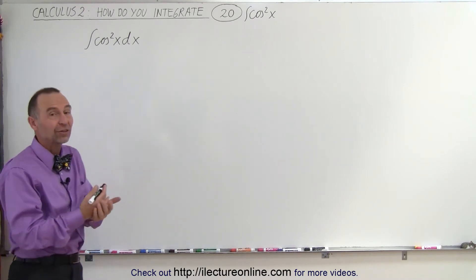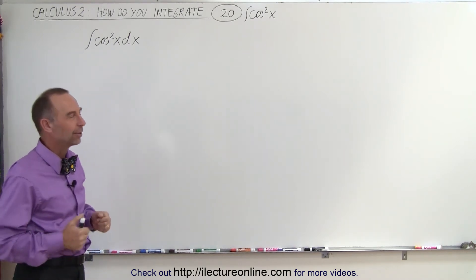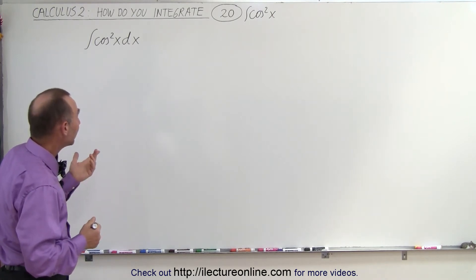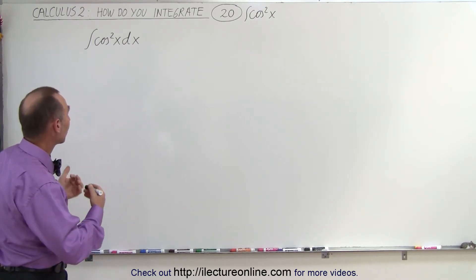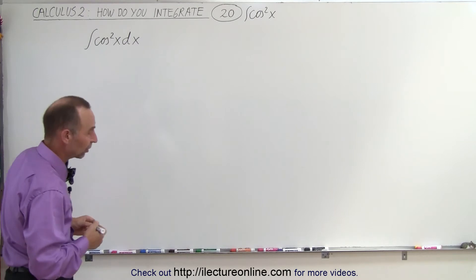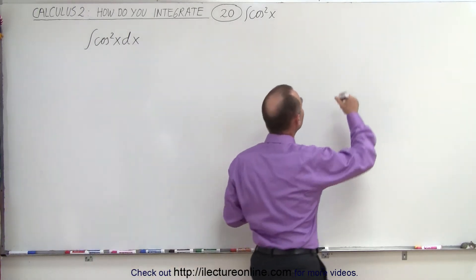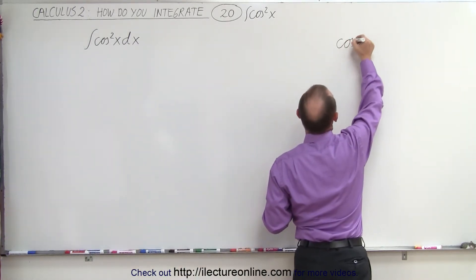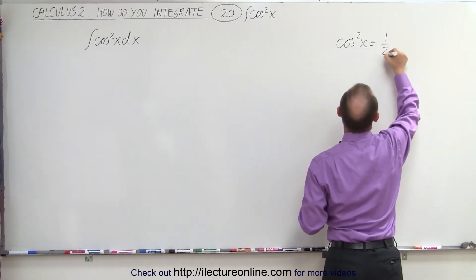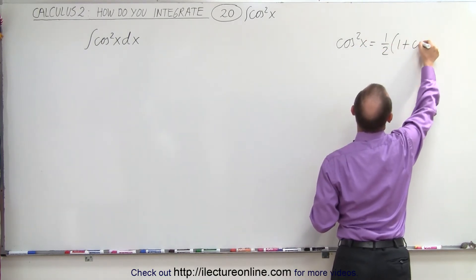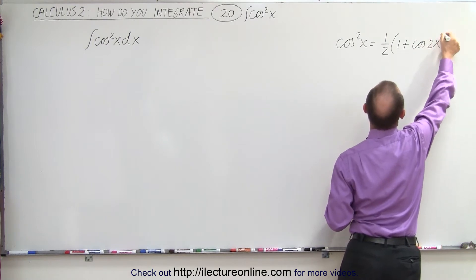If you see the cosine squared of x, you say I know how to integrate that. The trick again is to find a proper substitution for the expression cosine squared of x. And it turns out the identity allows you to write this as one-half times one plus the cosine of twice the angle.